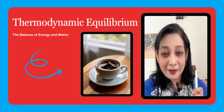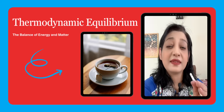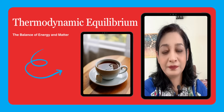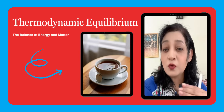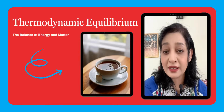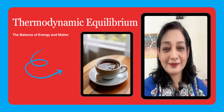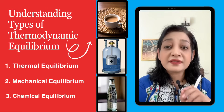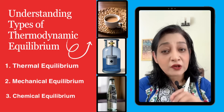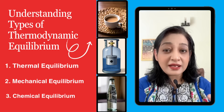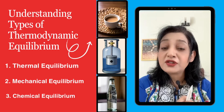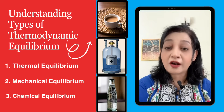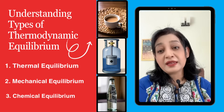Thermodynamic equilibrium: a system is in thermodynamic equilibrium when there is no net change in its properties. For example, when a cup of tea reaches room temperature and no further heat flow occurs, it is in equilibrium. To achieve thermodynamic equilibrium, the system must satisfy three types of equilibrium at the same time. Number one is thermal equilibrium: no temperature difference exists between parts of the system or between the system and its surroundings. If flow occurs, temperature remains constant throughout.